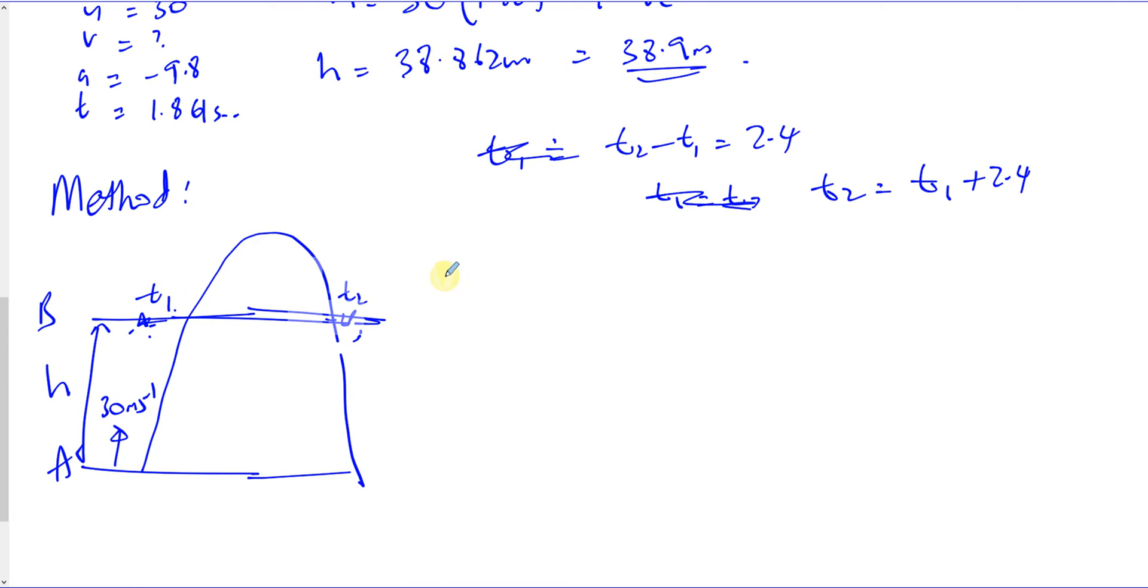So let's think about on the way up. On the way up, let's look at SUVAT. This is A to B on the way up. So we have S is H. And U is 30. And V, we don't know at that point. Speed is when it's reached B. A, of course, is minus 9.8. Again, we're taking upwards positive as it was projected upwards. And T, I'm going to call it T1.